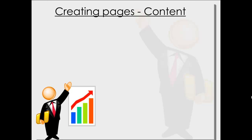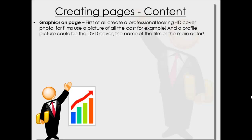Okay, so that's getting started. You might be thinking, how am I going to make money from this? I'm going to get onto that at the end. So creating pages — what to actually put in the page once you've created it and got this exposure. Graphics on the page: you need to first of all create professional looking HD covers. For films, you can use a picture of the cast — all the cast lined up — or an action picture. And obviously a profile picture — you could use a DVD cover, the name of the film, or the main actor. If you're not sure about doing this, use the first video I put in, which covers getting started with the graphics, covers, and profile pictures.